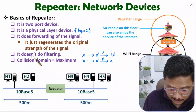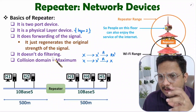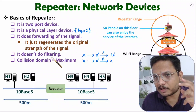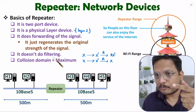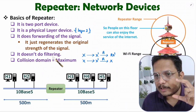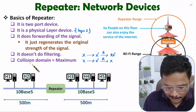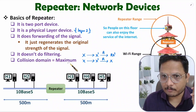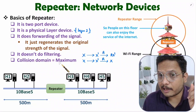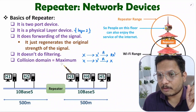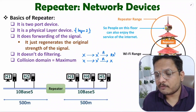There is one more important point: the repeater does not do filtering. I will explain this through a practical case study for more clarity. Also, the collision domain is maximum with a repeater — I will explain both filtering and collision domain through practical case studies.